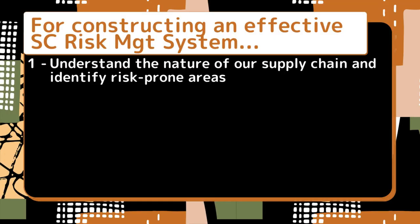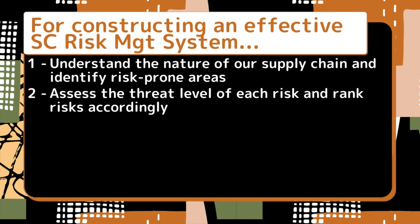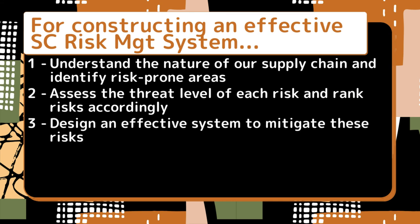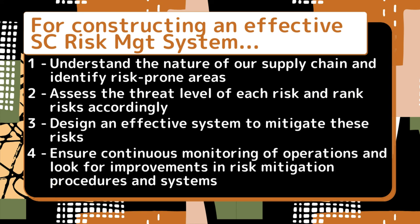Number one: understand the nature of our supply chain and find out areas where we expect risks. Then identify risks separately and record them as per their level of impact. Number two: assess the level at which each risk can affect our supply chain and categorize them accordingly — the ones that can affect us most must be placed first and the ones with less effect at the end. Number three: design an effective system to mitigate these risks. And number four: ensure continuous monitoring of operations and look for improvements in risk mitigation procedures and systems.